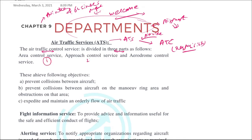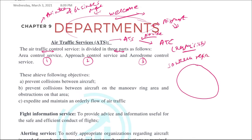The three parts of ATC are: one is the area control service, second is the approach control service, and third is the aerodrome control service. To understand this better, let's take a bigger region — say the southern region of India. All the controlling of flight movement within this big area is the area control service.